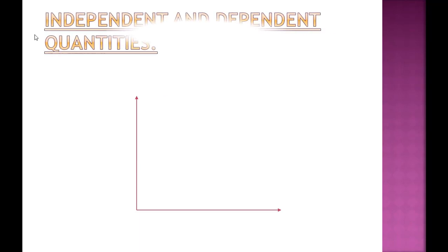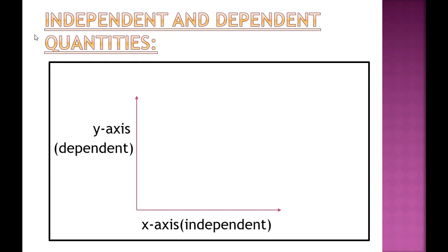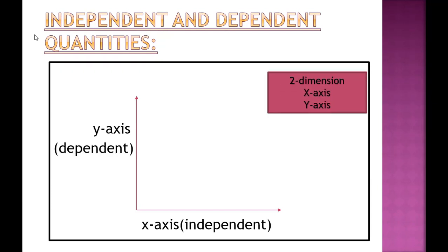We are going to draw a graph between independent quantities and dependent quantities. For example, we can draw a graph between distance and time. Time is an independent quantity — time passes in equal intervals. Distance is plotted along the y-axis because your distance depends on time.